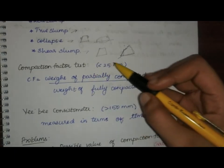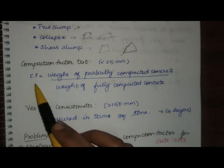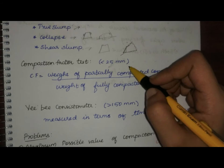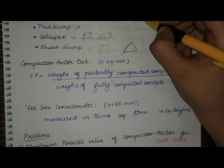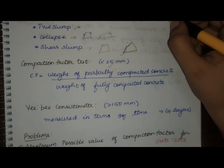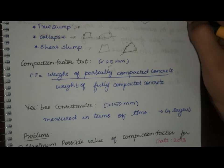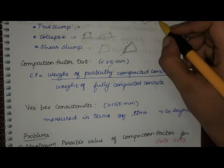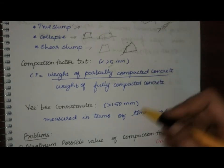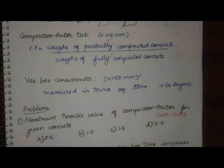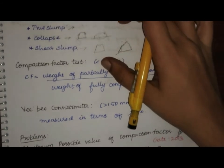The compaction factor is weight of partially compacted concrete divided by weight of fully compacted concrete. In the field, the slump test is always preferred first. If the slump value is less than 25 mm, the slump test is not appropriate and the compaction factor test should be used instead. If the slump value is greater than 150 mm, the VB consistometer test should be used. VB consistometer is measured in terms of time.